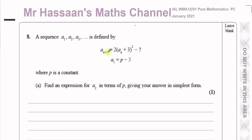What this means is, to get to the next term, you take the previous term, add 3 to it, square that, multiply the result by 2, and take away 7. So to get to the next term, you replace the 'an' in the formula with the term before the next term. So we want to find a2.